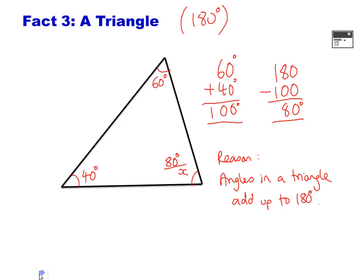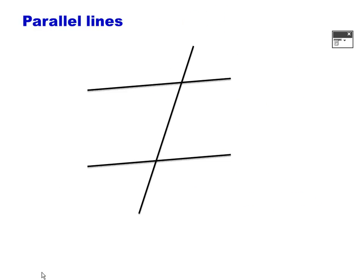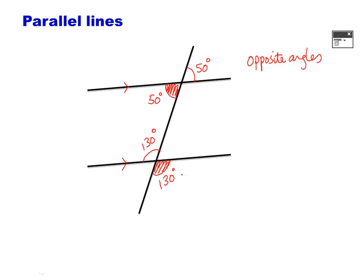Those are the three basic angle facts. Now we're going to look at ones you need to remember involving parallel lines. In an exam, arrows are put on lines to show they're parallel. If this angle is 50 degrees, then the angle directly opposite it is also 50 degrees — opposite angles on a cross are always the same. For example, if one angle is 130 degrees, the opposite angle is also 130 degrees. Opposite angles are the same.